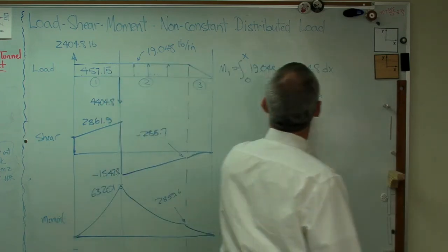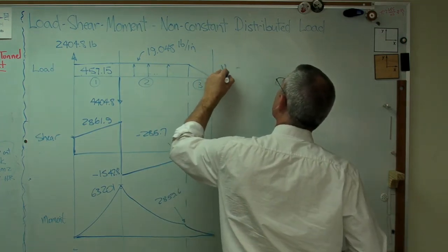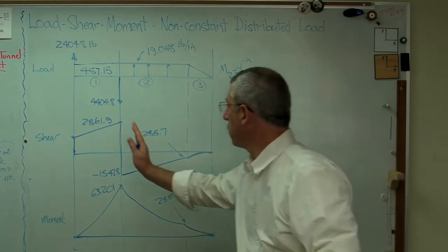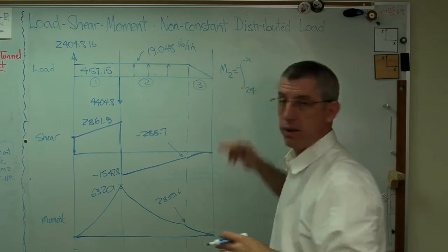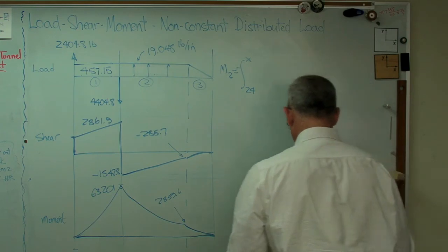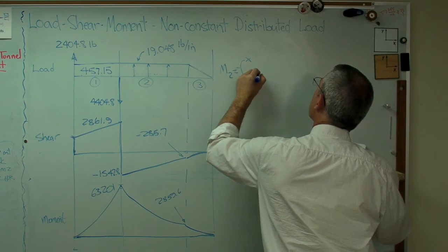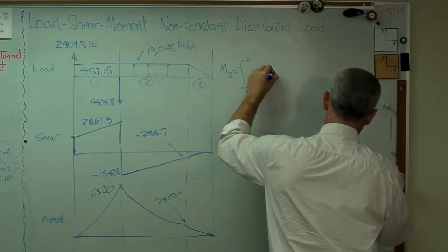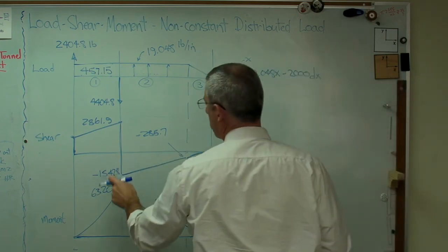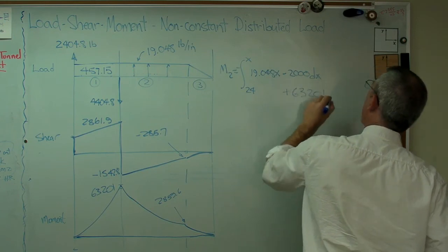Now, let's do M2. Same way. M2 is going to be the integral from 24 to x. Now, we're going to go from here to here. And again, x in the upper limit because we don't want a number. We want a function. And we're going to write down the same expression we had for shear in that area. So it's 19.048x minus 2000 dx. But now we have an offset to deal with here. So we're going to go plus 63201.